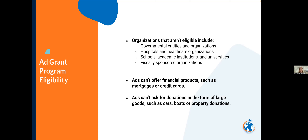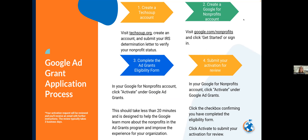Some other stipulations: ads can't offer financial products like mortgages or credit cards, and you can't ask for larger donations like cars, boats, or property. Generally it's a pretty open program. The application process is fairly simple — it's more about getting access to the proper accounts rather than writing paragraphs about why you should qualify.